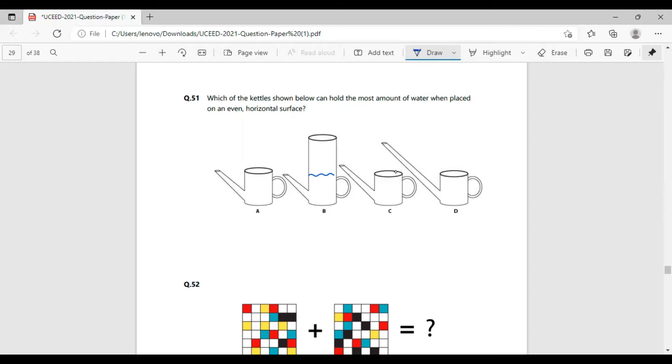Part D, we have the same height as C, but the narrow opening is way large. Again, not the exact amount, exactly the same amount of water filled in part C will be filled in part D. So it is quite clear that part A will be holding maximum amount of water.